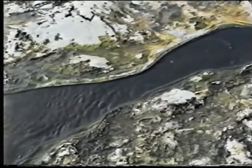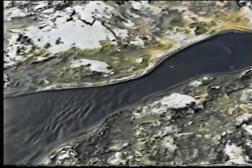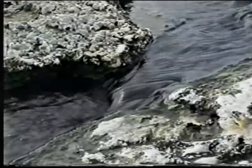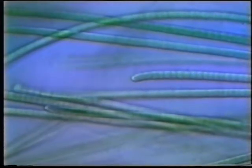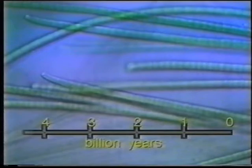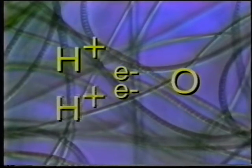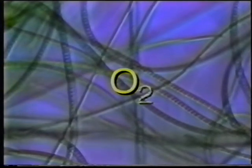H2S was the first source of electrons and hydrogen ions for making energy carriers like NADPH and ATP. But electrons and hydrogen ions are also available from a far more abundant substance: H2O. The first organisms to carry out water-splitting photosynthesis appeared around 2 billion years ago — cyanobacteria. Breaking down a water molecule provides hydrogen ions and energetic electrons. One atom of oxygen combines with another to form O2, oxygen gas, given off as waste.